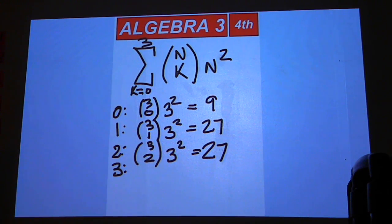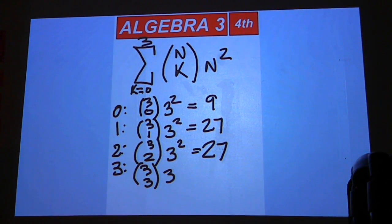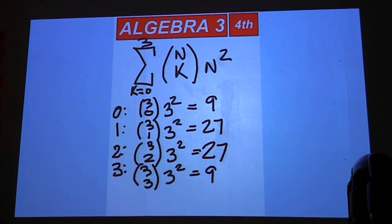And then for the three down here, we'll have three choose three. How many ways can you do that? One times nine is nine.